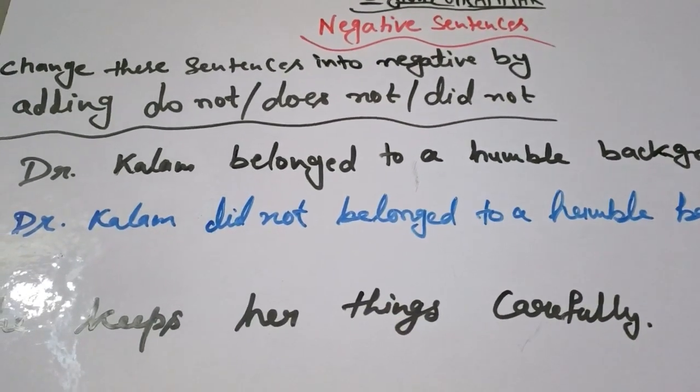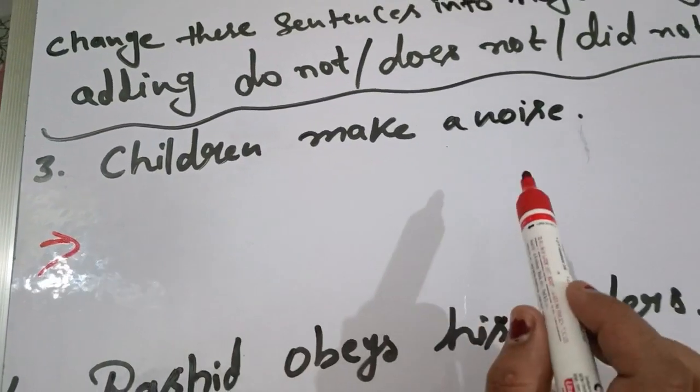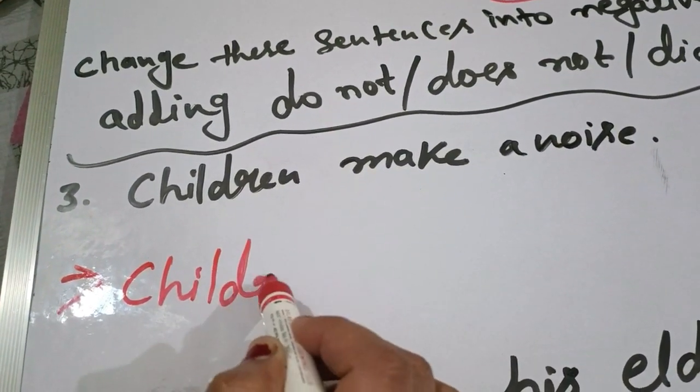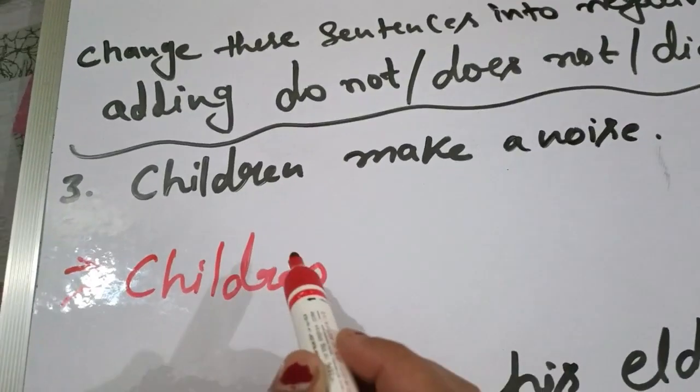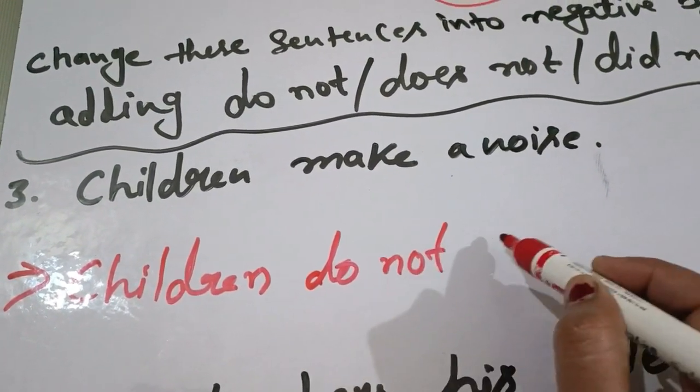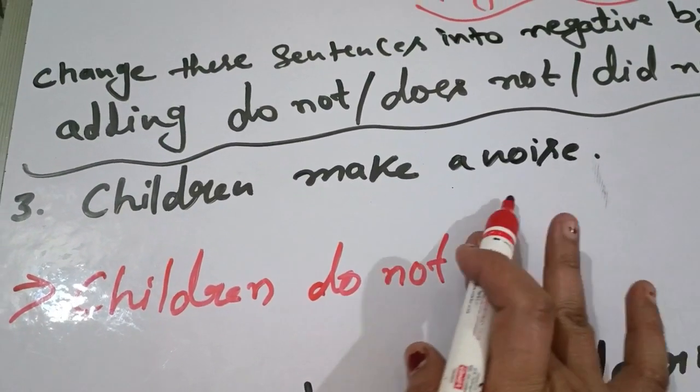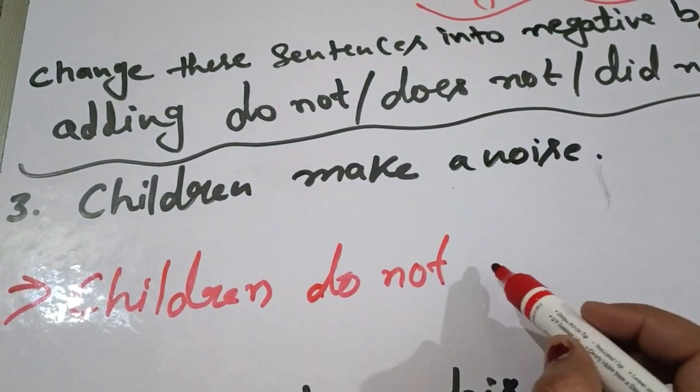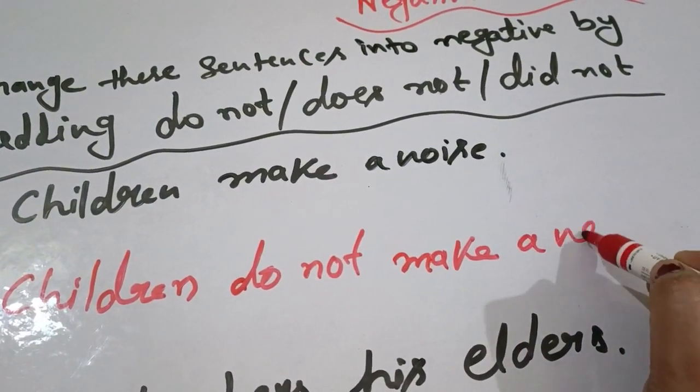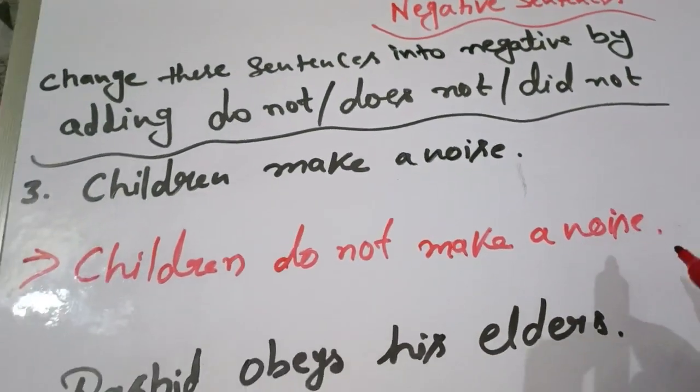Let's see more examples. Children make noise. Children do not make noise.